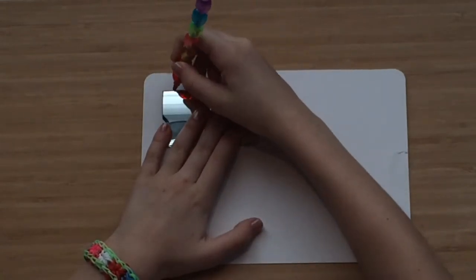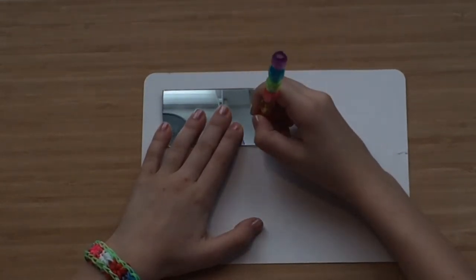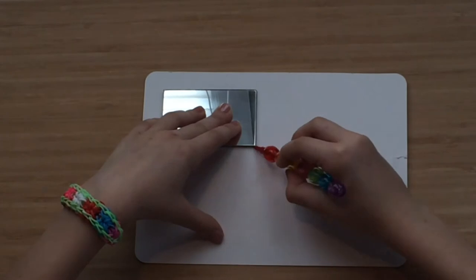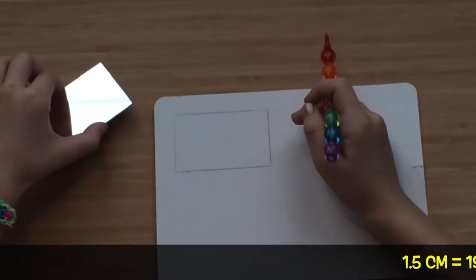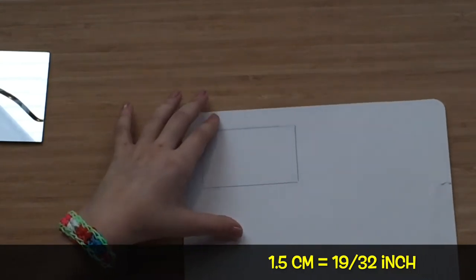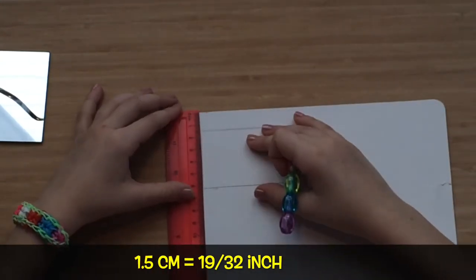First of all, let's contour the mirror on the cardboard to make a sketch of frame. Deviate one and a half centimeters and make a rectangle.